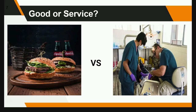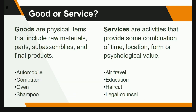In this illustration, on the left, you see two burgers and the background shows two bottles of coke and also a basket. This is an example of goods. On the right side, you see two dentists performing a dental operation, which is an example of services. So how do we differentiate goods from services? Goods are physical items that include raw materials, parts, sub-assemblies, and final products. Examples of which are automobiles, computers, oven, and shampoo.